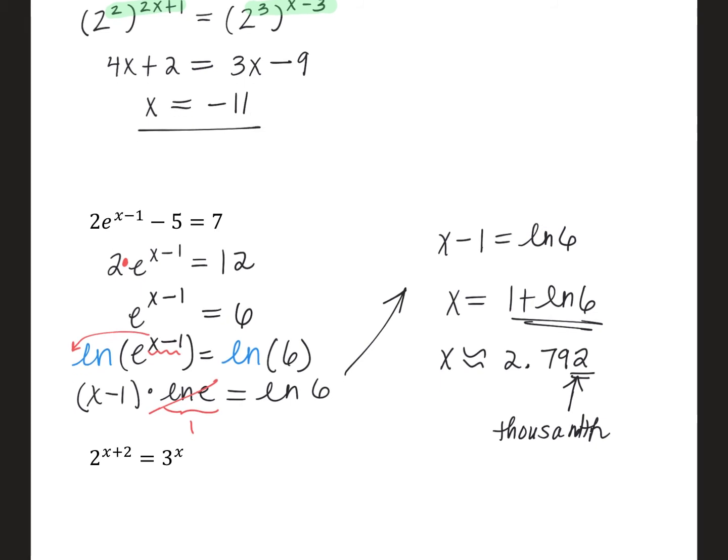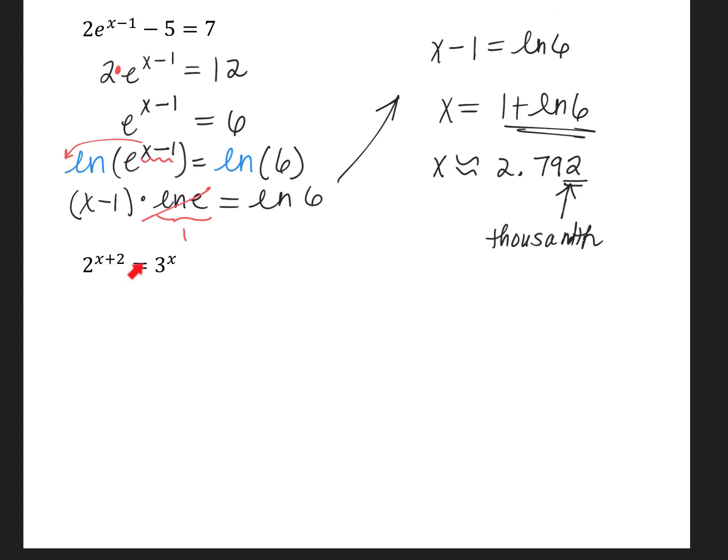As I go to this next one, I see one base and one exponent on each side. Can I equate the bases? Unfortunately, two and three are not powers of the same number. So what I do then is I have to take the natural log of both sides. So if I take the natural log of the left side and then the natural log of the right side, I'm going to find that the natural log of two to the X plus two is equal to the natural log of three to the X.